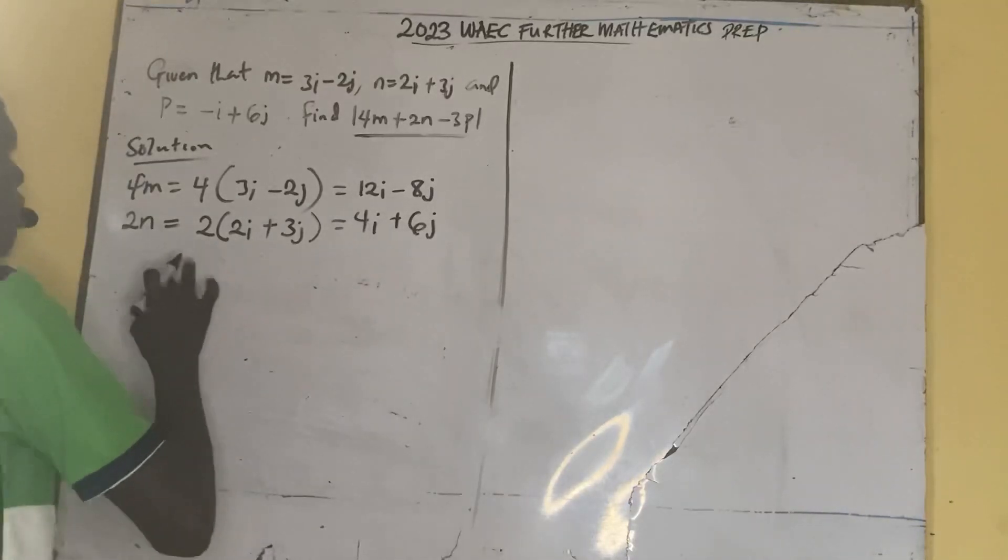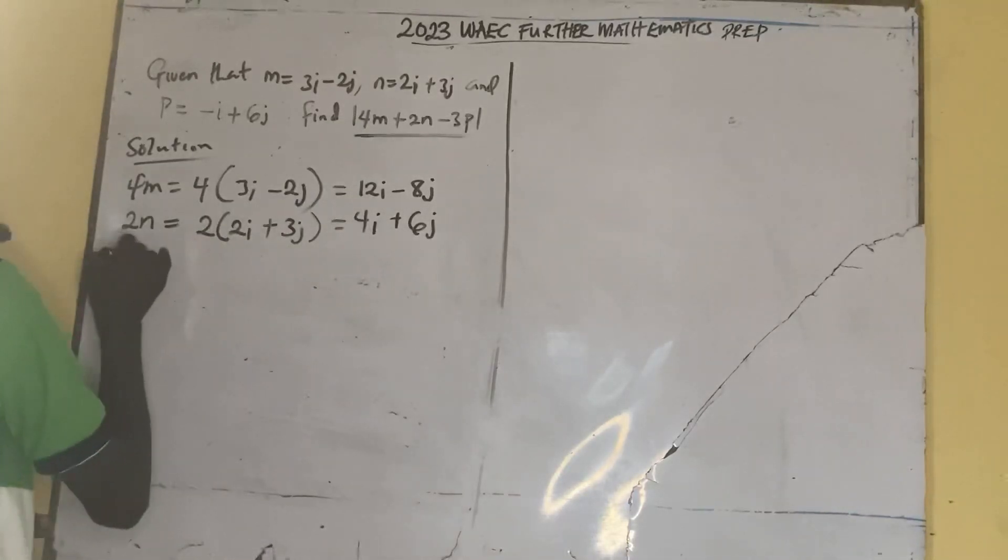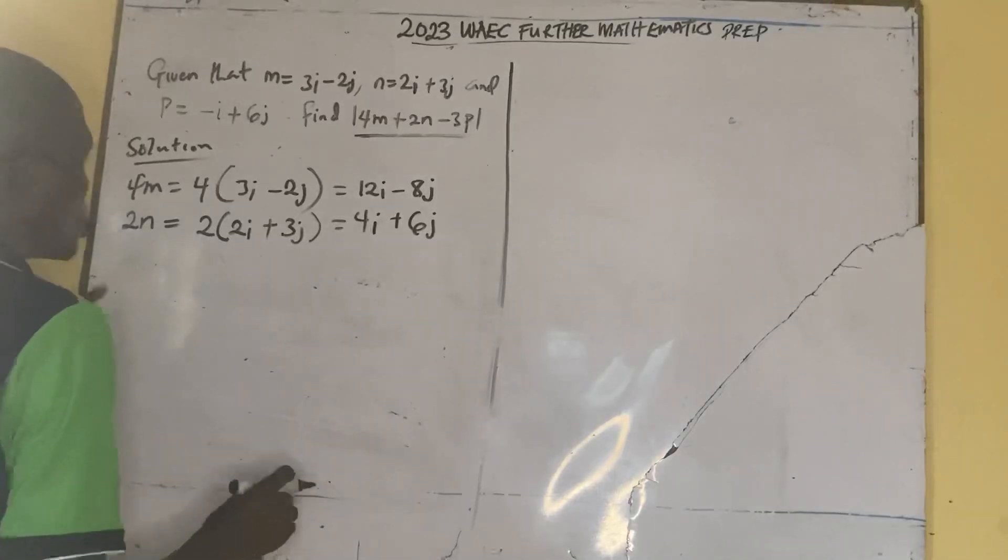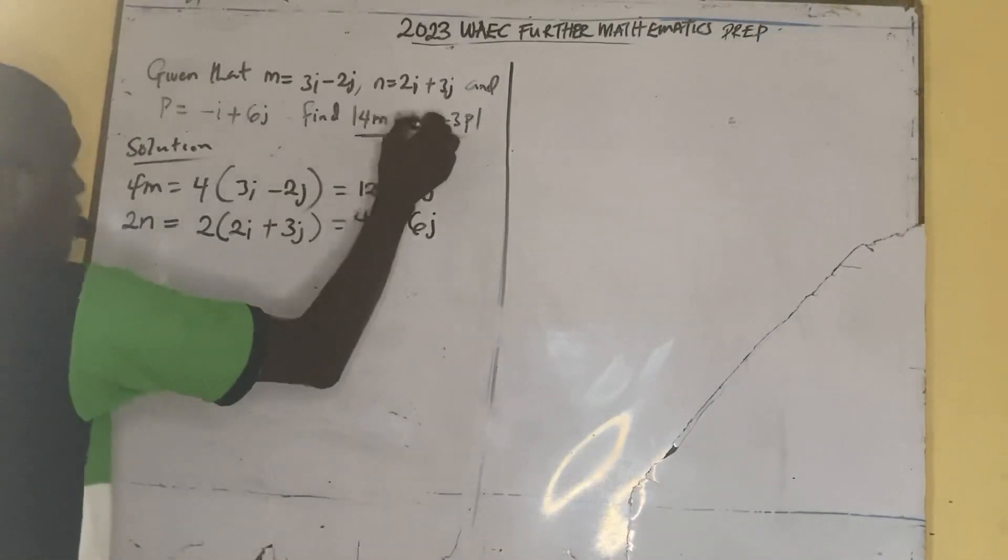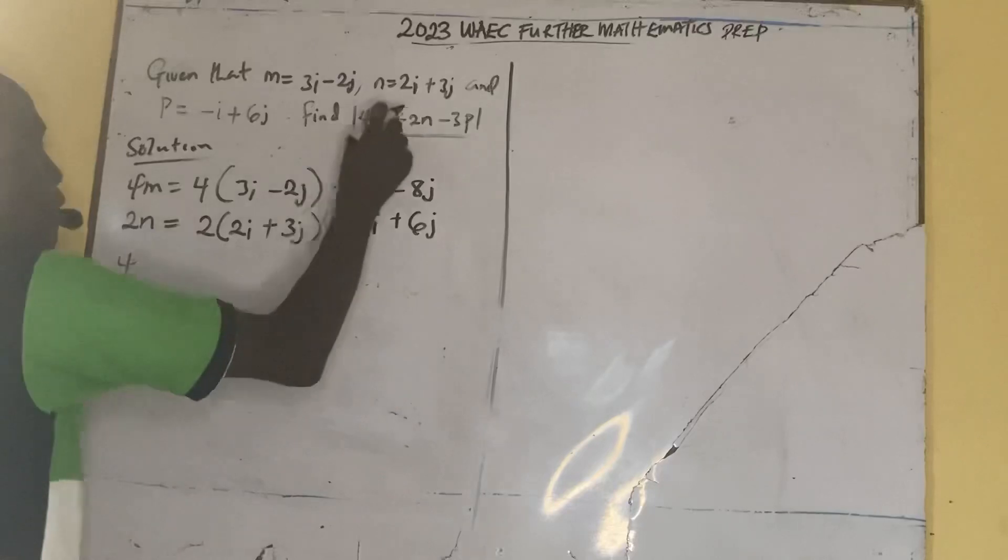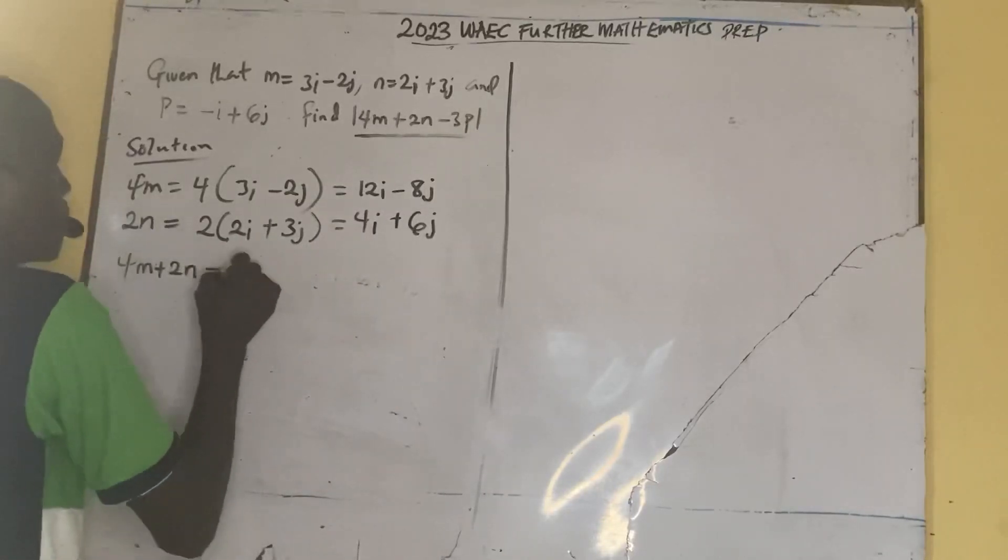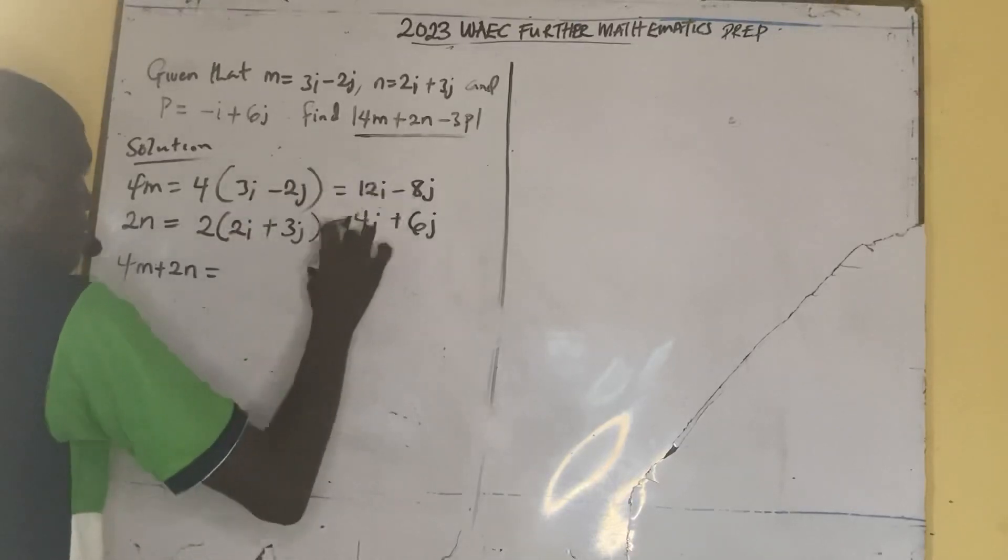So now we have that. So the next one is 3p. But before that, let's add them together. Let's add this together so as to really balance it up. So now add this first together because plus becomes minus. So 4m plus 2n first.